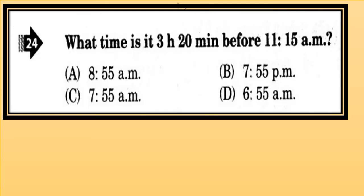What time is it 3 hours 20 minutes before 11:15 am? Subtract 3 hours from 11:15 am and then subtract 20 minutes. You will get your answer.